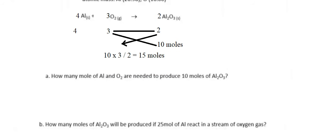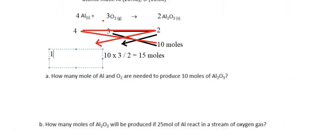Next, similarly for aluminum: we have 10 multiplied by 4 divided by 2. That gives 10 × 4 ÷ 2, which equals 20 moles of aluminum.